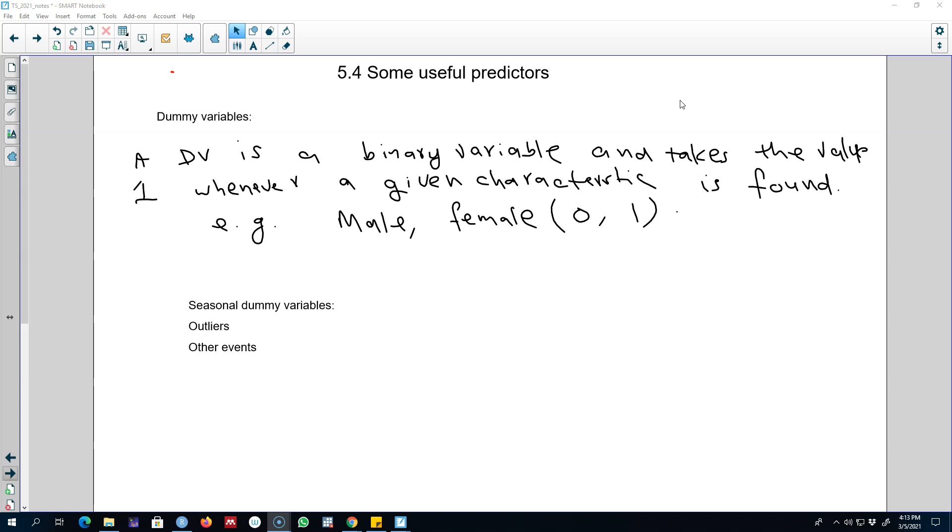In this video, I'm going to talk about a special type of variable that you can include in your regression model. These variables are called dummy variables, and they show the presence or absence of a particular attribute in a series. Normally, we model these variables as binary variables taking the value of either zero or one. Zero shows the absence of that attribute and one shows the presence.